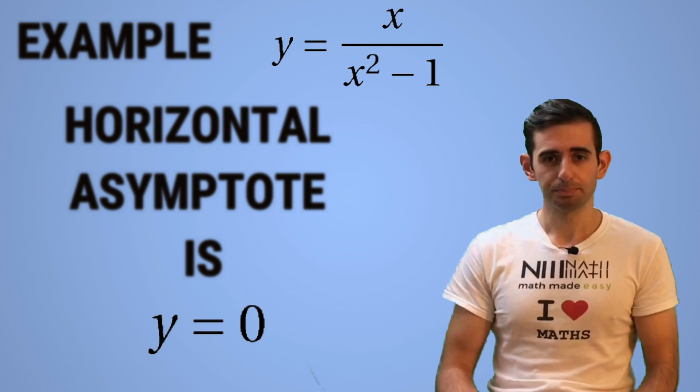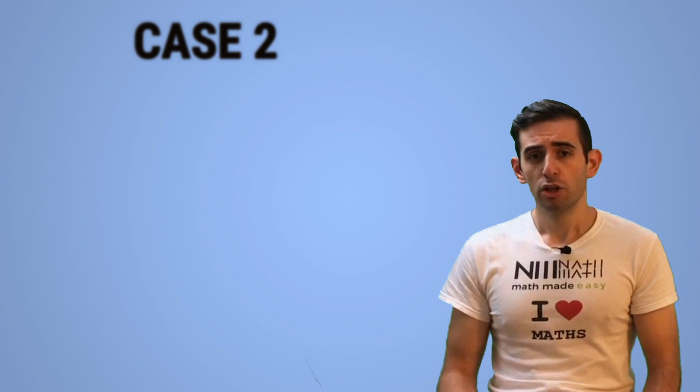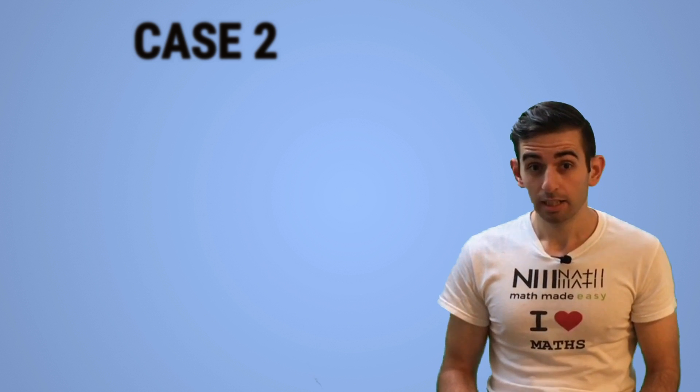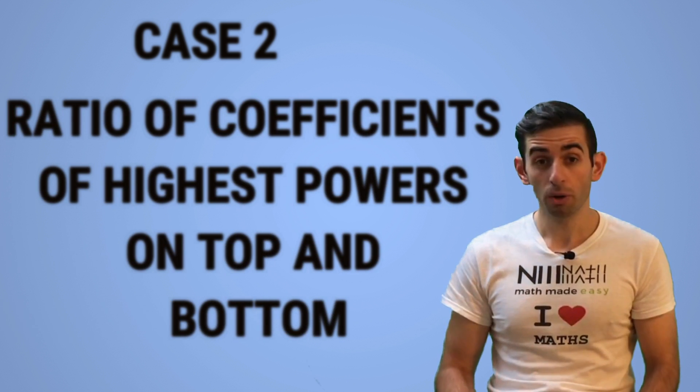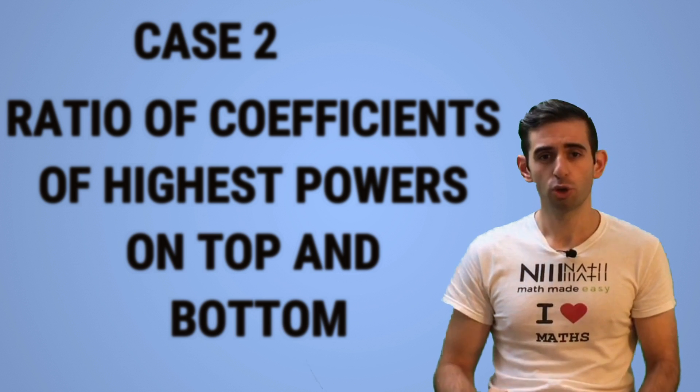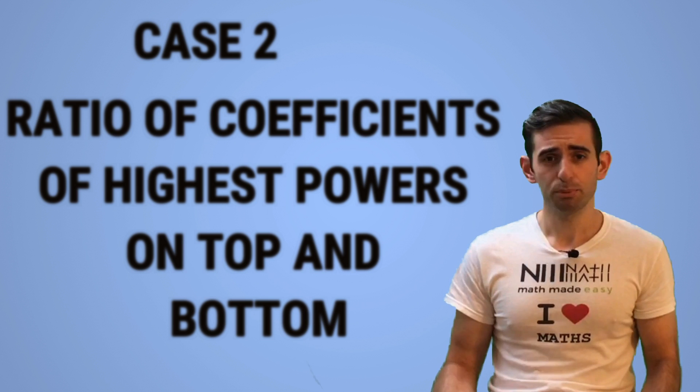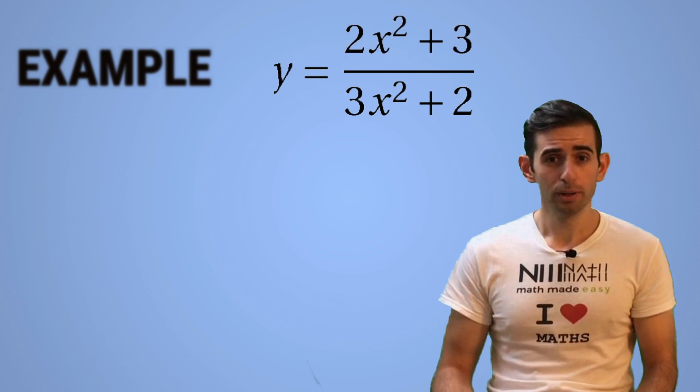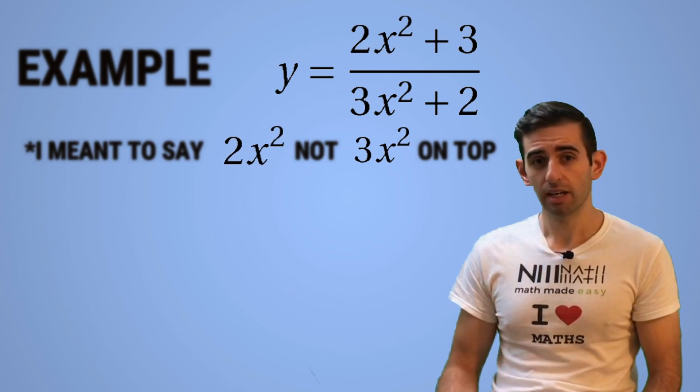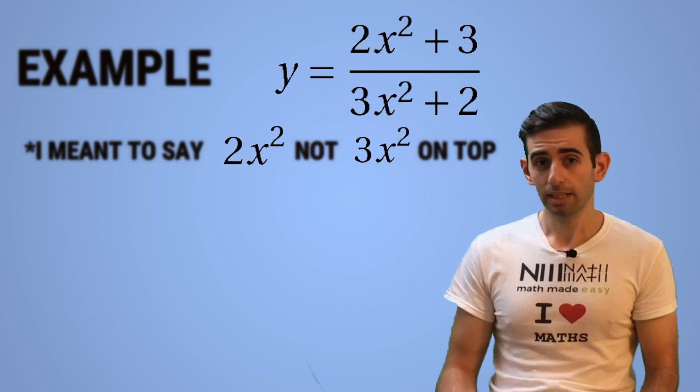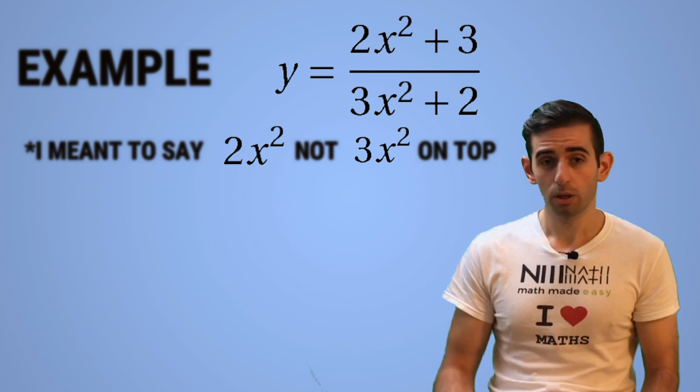Now in case two, when the powers are the same, the horizontal asymptote is simply the ratio of the coefficients of the highest powers on top and bottom. That's it, that's how simple it is. So if we look at an example, y equals two plus three x squared over three x squared plus two, the horizontal asymptote will be...